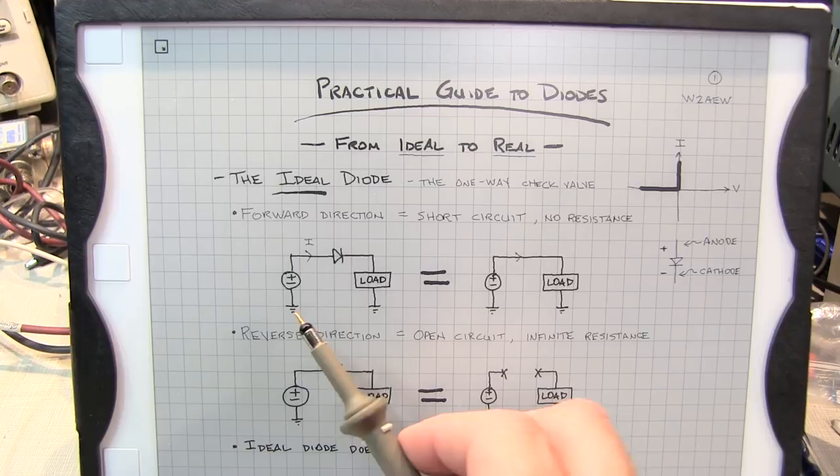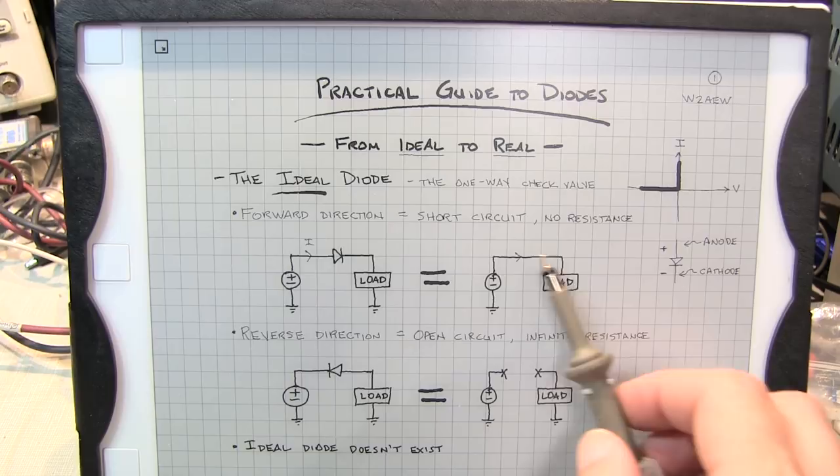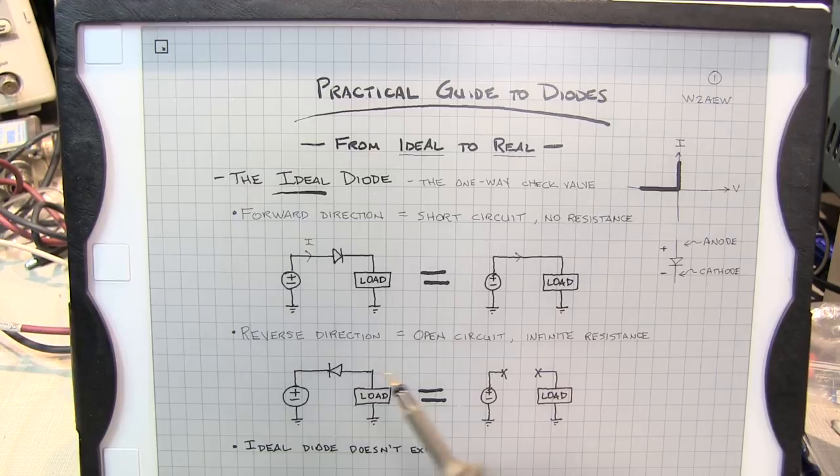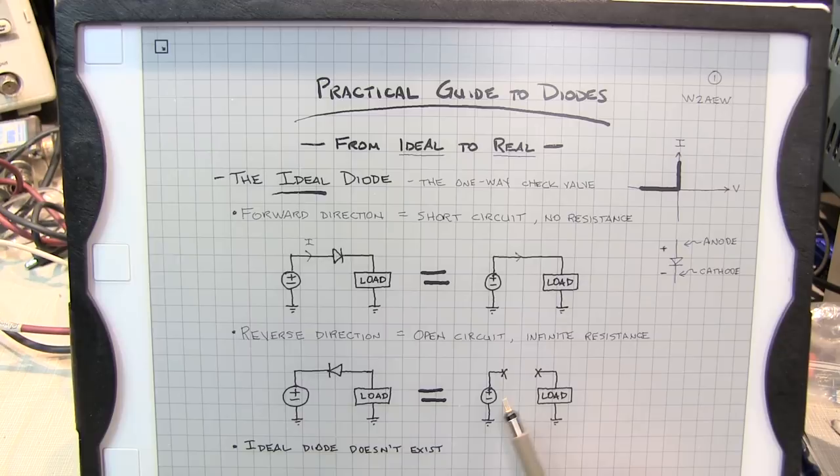In this case say from a voltage source to a load. You can think of it as essentially the diode not even being there and just having a wire connecting things up. And in the reverse direction an ideal diode looks like an open circuit. It's as if you literally cut the wire and you don't have a connection at all between your voltage source and your load. Now of course ideal diodes don't exist but oftentimes it's very helpful just to look at the behavior of a diode in many circuits in this ideal sense.